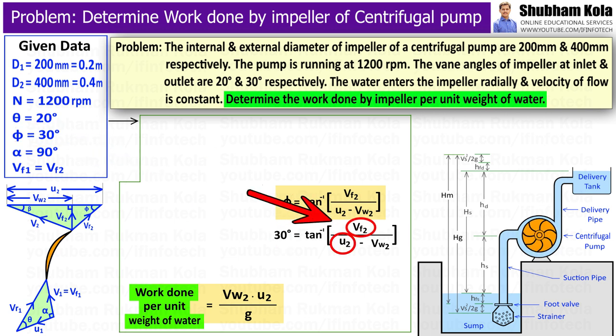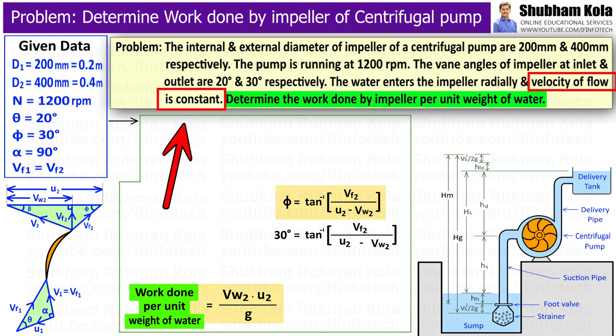But here, we don't know the values of Vf2 and U2, and in the problem they have mentioned that velocity of flow at inlet and outlet is constant, that is Vf2 equal to Vf1.